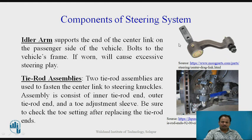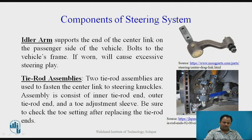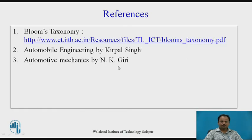The idler arm supports the end of the center link on the passenger side of the vehicle and bolts to the vehicle frame. If worn, it will cause excessive steering play. The tie rod — shown in blue — connects the center link to the wheel hub. Two tie rod assemblies are used to fasten the center link to the steering knuckles. Each assembly consists of an inner tie rod end, outer tie rod end, and a toe adjustment sleeve. Be sure to check the toe setting after replacing the tie rod ends.